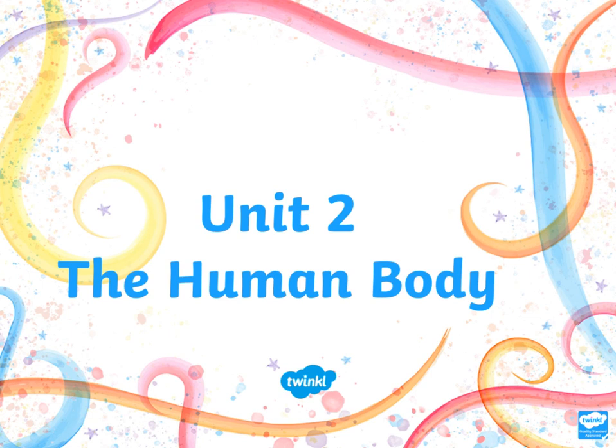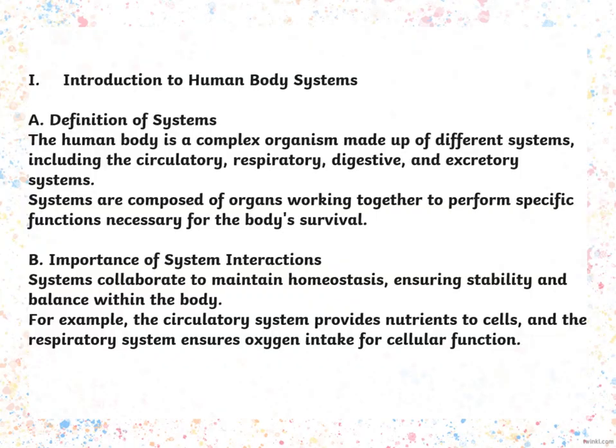Hello my dear students and welcome to unit 2 overview, which is the human body. Introduction to human body systems: the human body is a complex organism made up of different systems including the circulatory, respiratory, digestion, and excretory system. Systems are composed of organs working together to perform specific functions necessary for the body's survival.